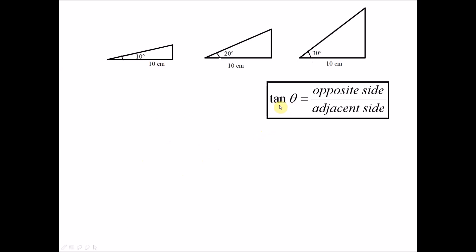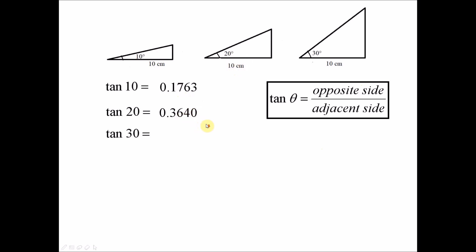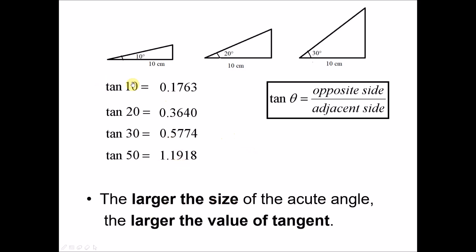For tangent, we look at the relation between its values and the angle. Tangent 10° — opposite side divided by adjacent side of 10 — gives 0.1763. Tangent 20° gives 0.3640. Continuing with 30° and 50°, the pattern is clear: the larger the size of the acute angle, the larger the value of tangent.